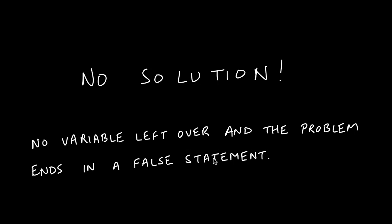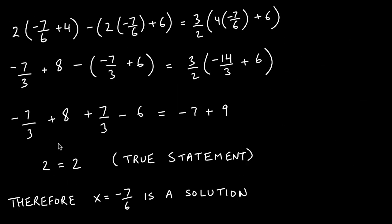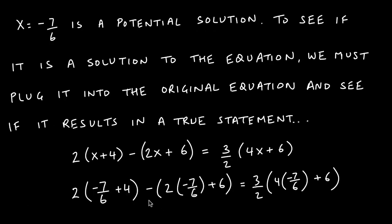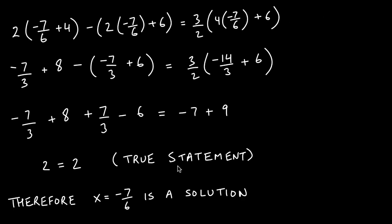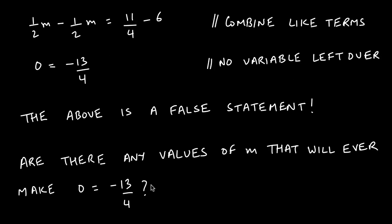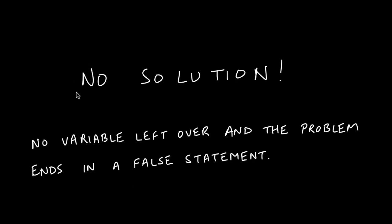This is different from the first example. There, when we solved, we were left with a variable equaling a number, giving us a potential solution to verify. Here, we're never given that opportunity — we end up with no variable left and directly reach a false statement. Whenever that happens, we have no solution.